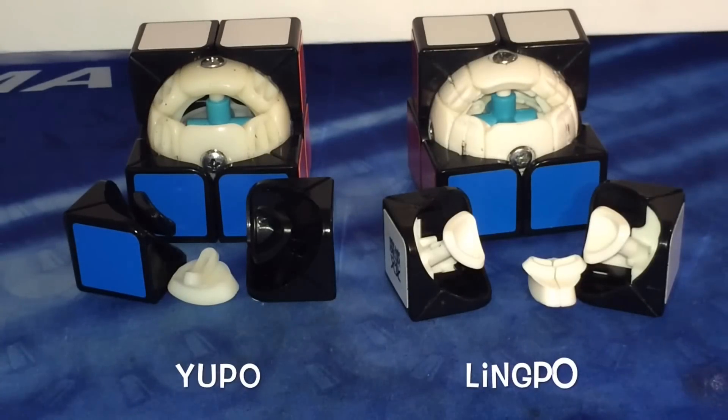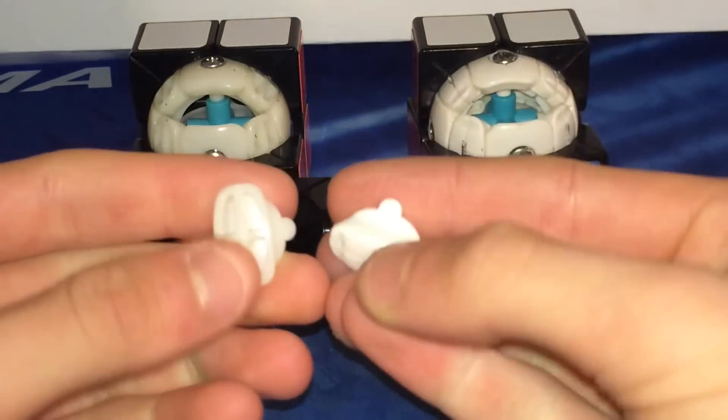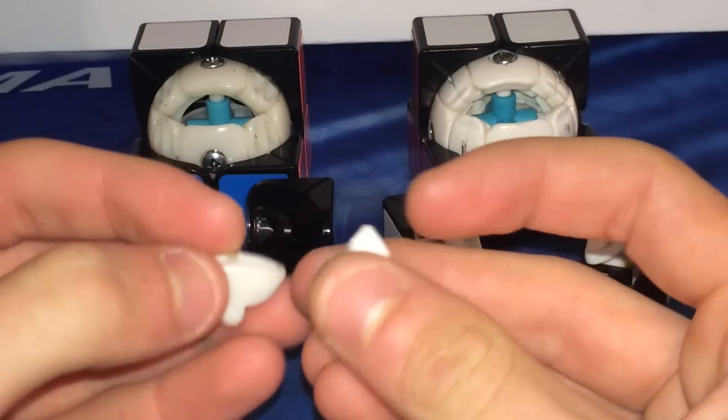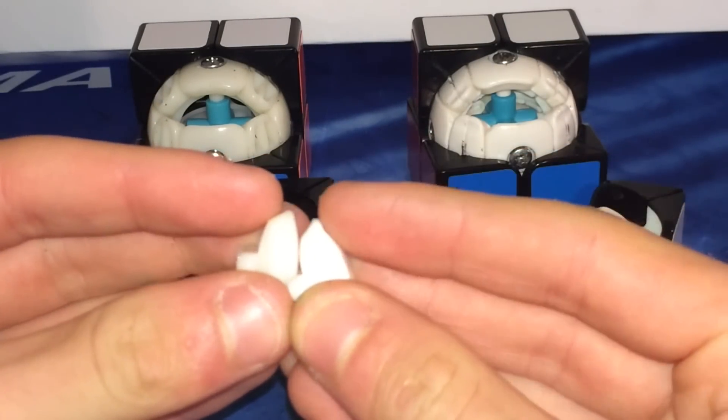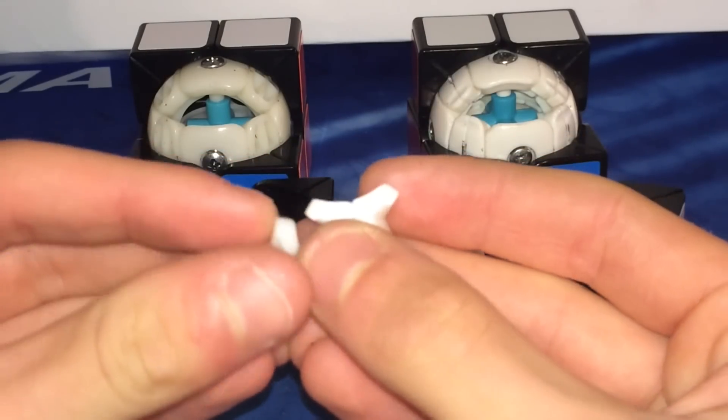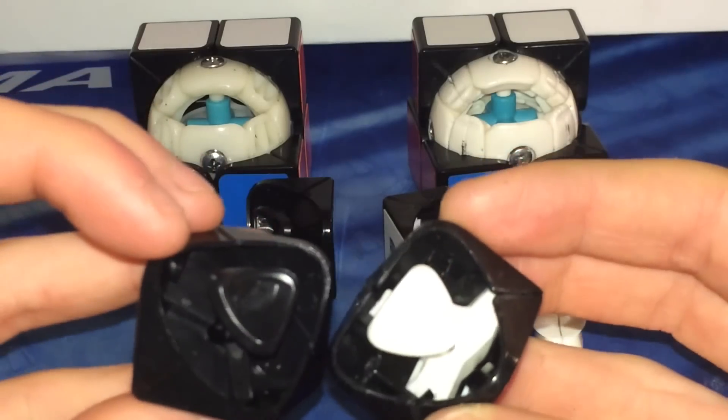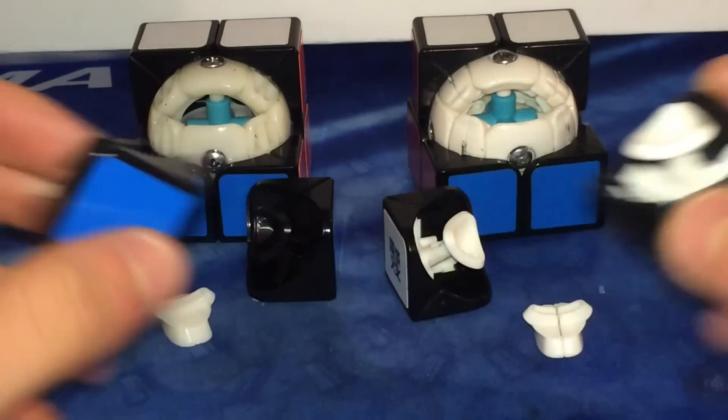These cubes have very similar mechanisms. Let's take a look at the edge pieces. They're almost the exact same. There are a couple divots where there aren't on the Yupo, such as right here on the top, and a little bit different on the bottom here. But overall, they're basically the same. The corner pieces are also very similar, and overall have the same basic shape.